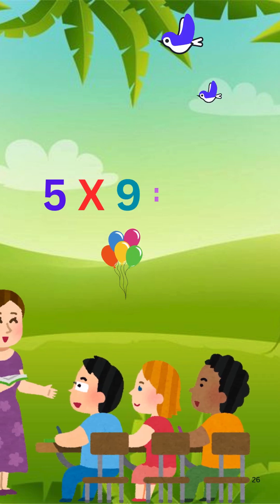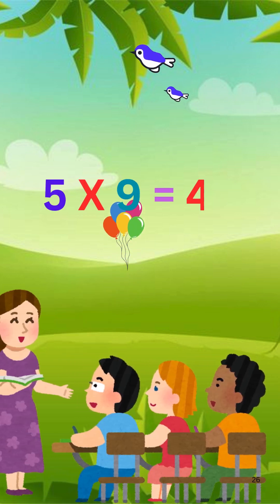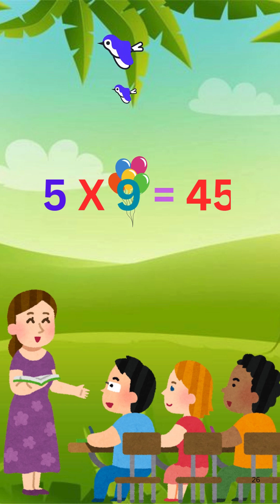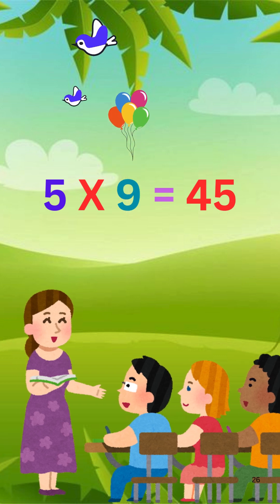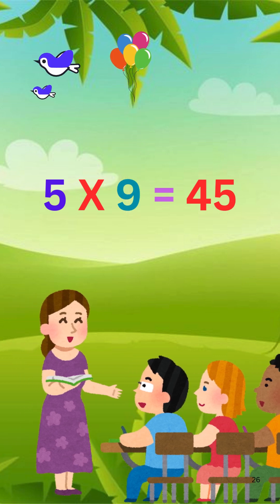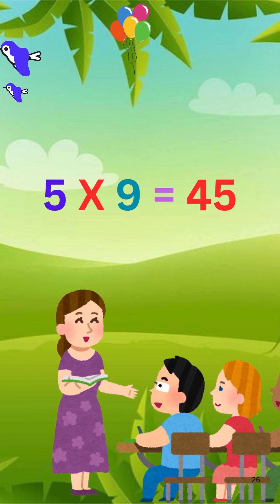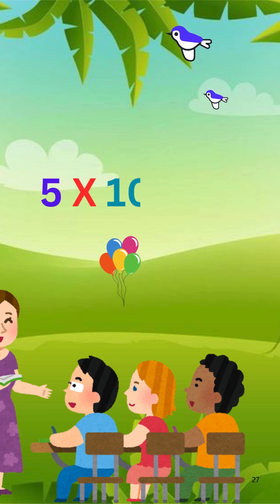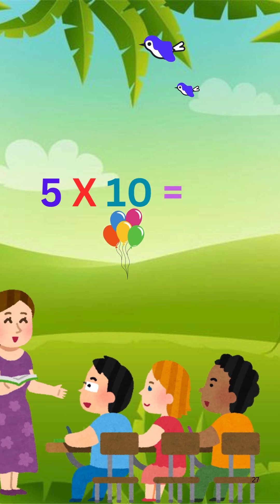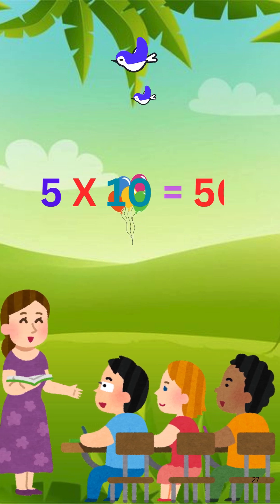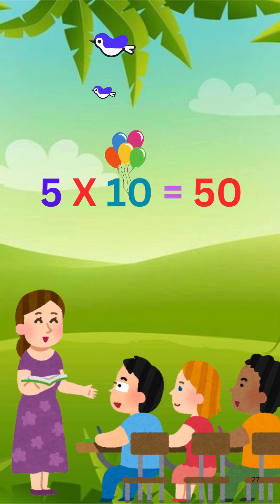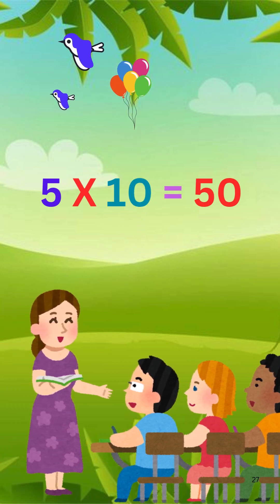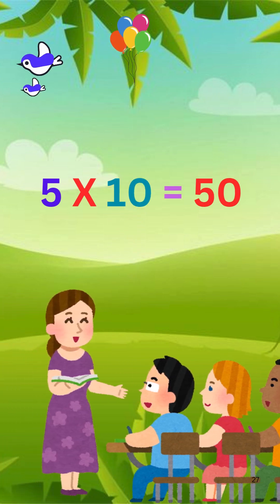Five times nine is forty-five. Five times ten is fifty.